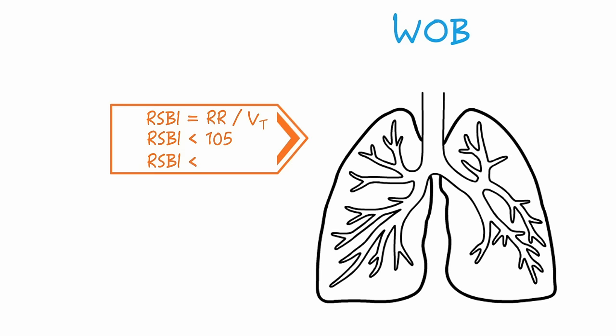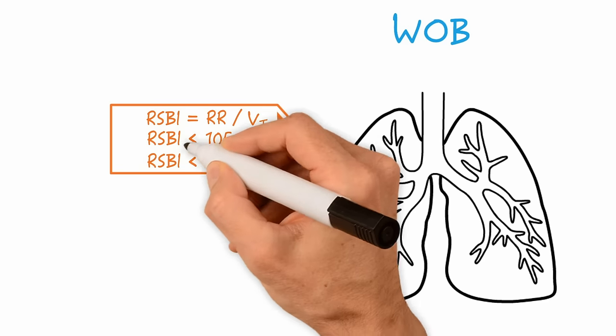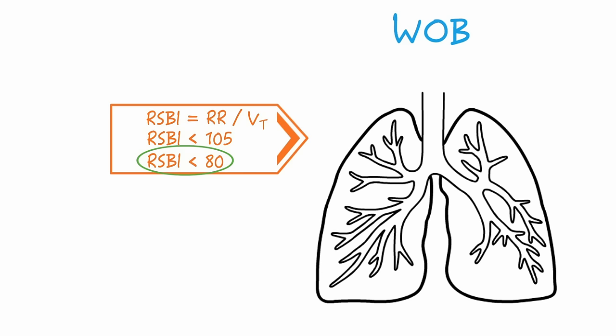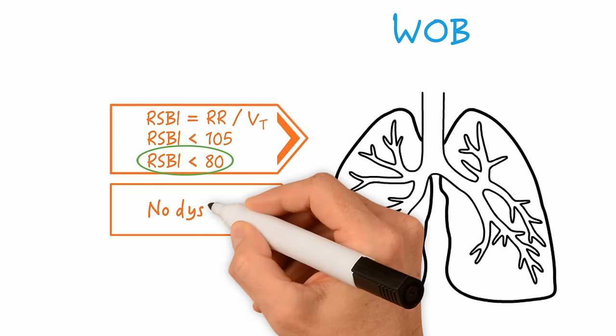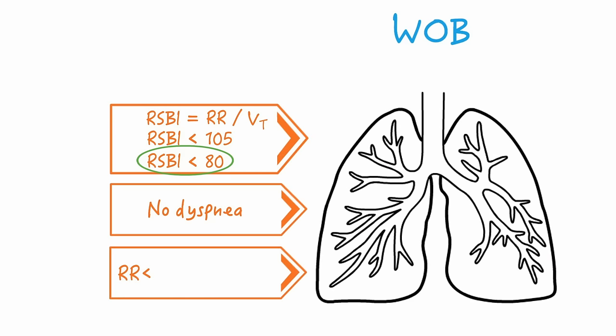Now another good observation is the absence of dyspnea and a respiratory rate less than 35 breaths per minute. If the patient has an increased respiratory rate greater than 35 breaths per minute for more than 5 minutes, the patient most likely will have a low probability of successful extubation.